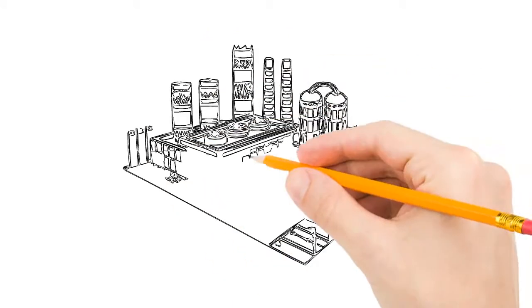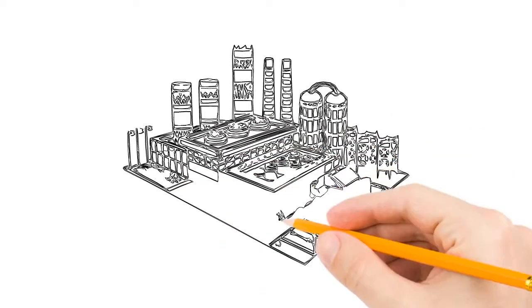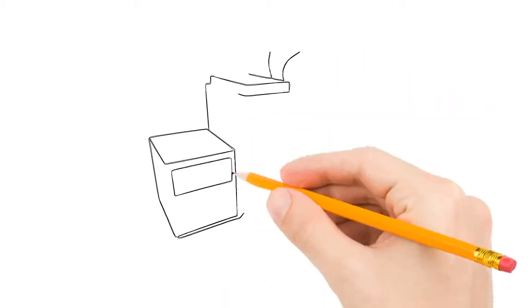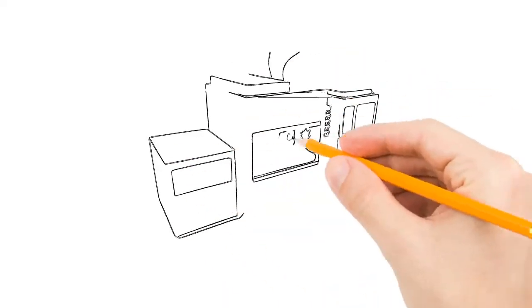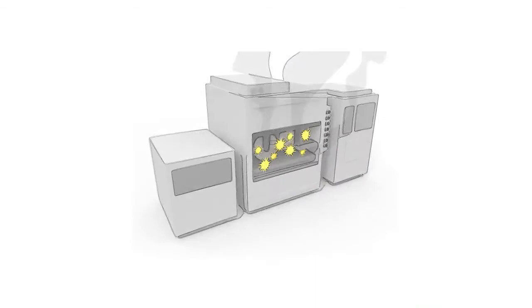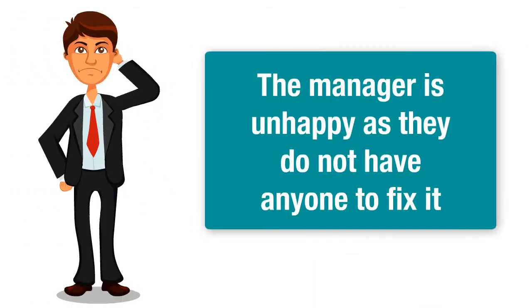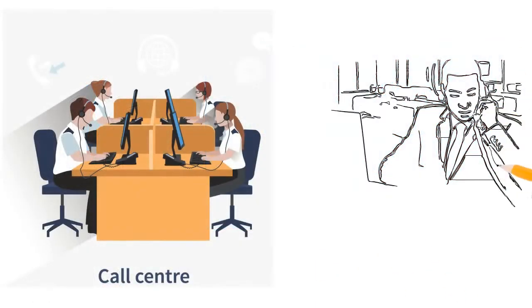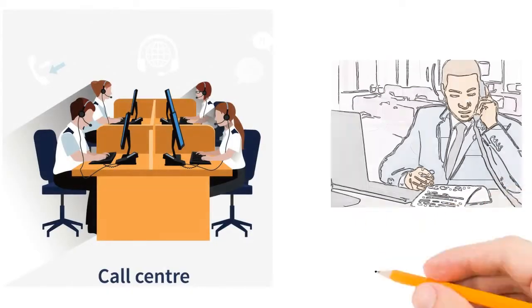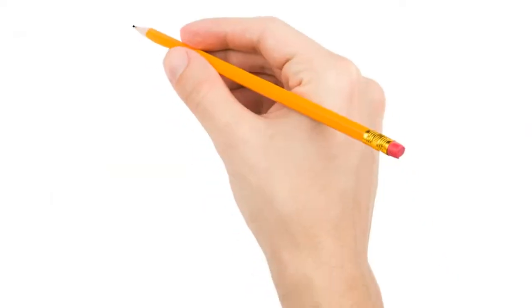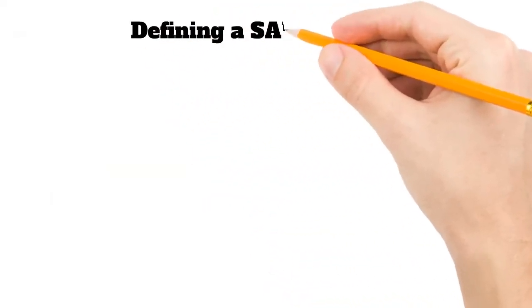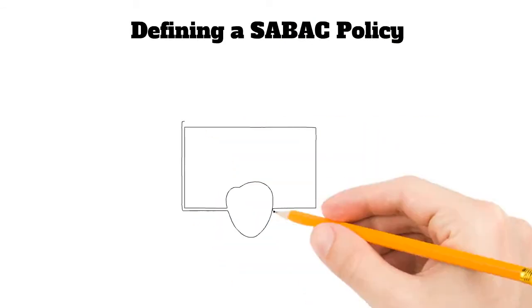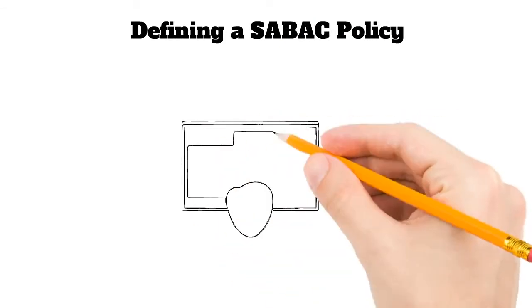Here is a factory employing semantic attribute-based access control. Suppose one of the machines at the factory is broken and none of the employees knows how to fix it. Hence, they have to ask for help from the producer of the machine. Using our semantic attribute-based access control (SABAC), which is a combination of ABAC and semantic technologies, it is possible to control most accesses using a few policies.